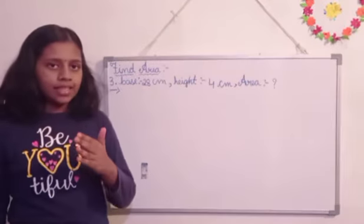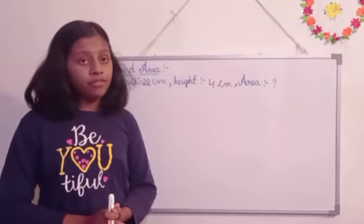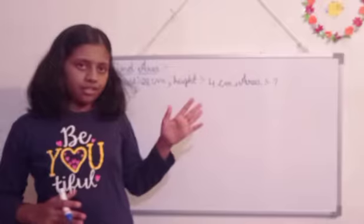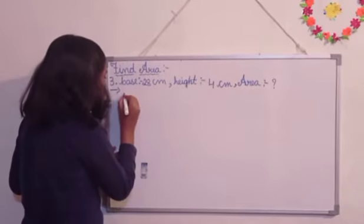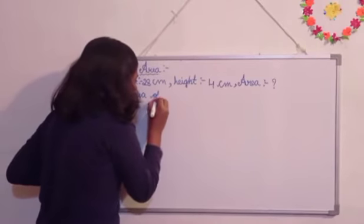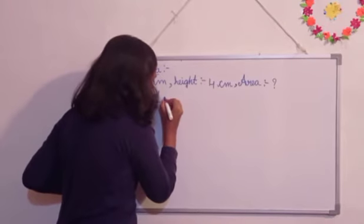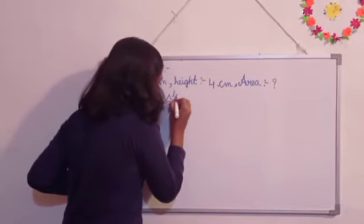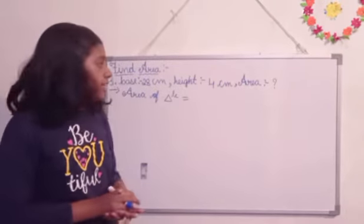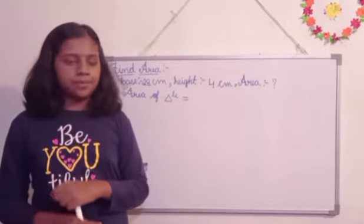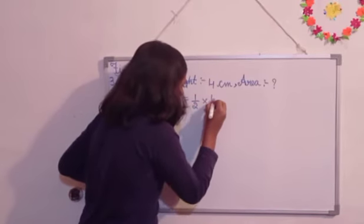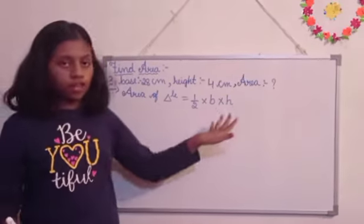So here, the first method or the first step I said in the before video only, so the first step is area of triangle formula, we are going to write here. So area of triangle is equal to, so what is the area of triangle? The area of triangle is half into base into height. So half into base into height is the area of triangle.